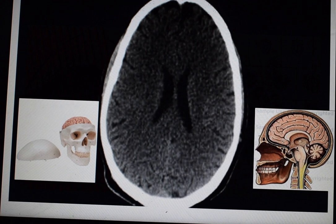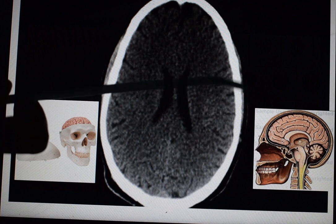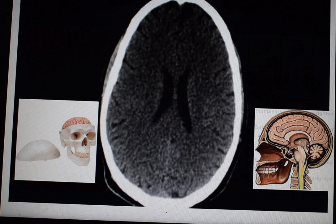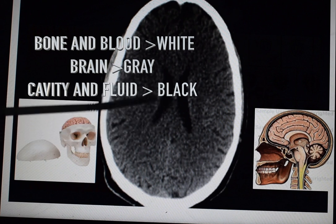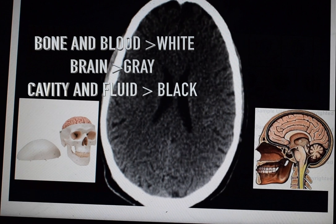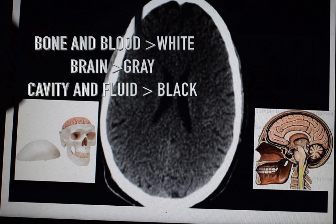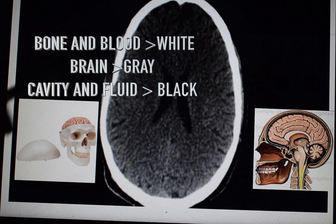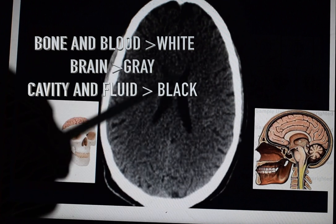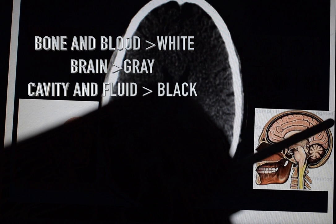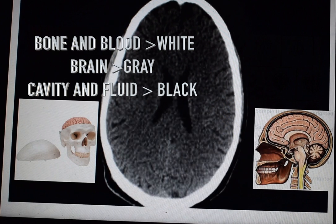First, always remember: white color indicates either bone or blood; gray color indicates brain parenchyma; and black color indicates a cavity or some kind of fluid other than blood. So this white color here indicates the skull bone, the gray color indicates brain parenchyma, and these two small cavities indicate our ventricular system in the brain.